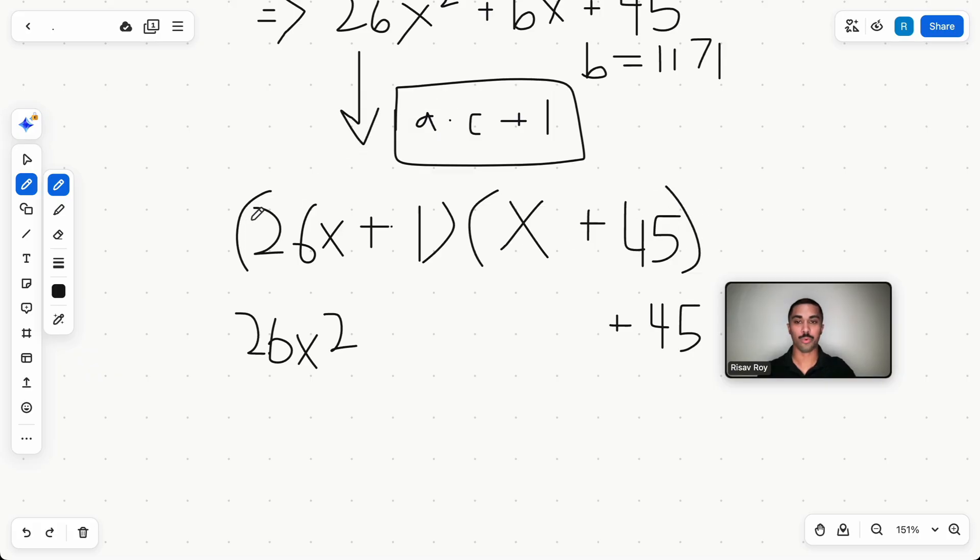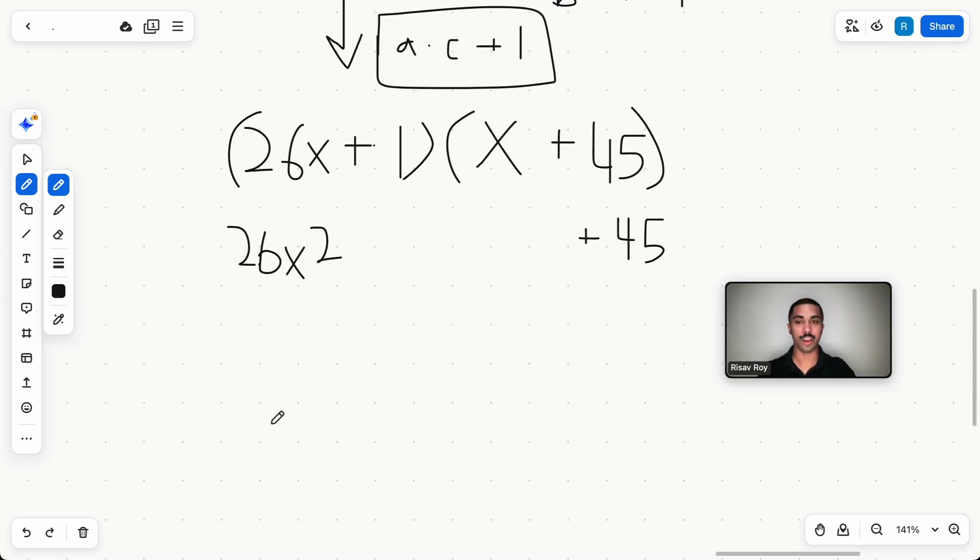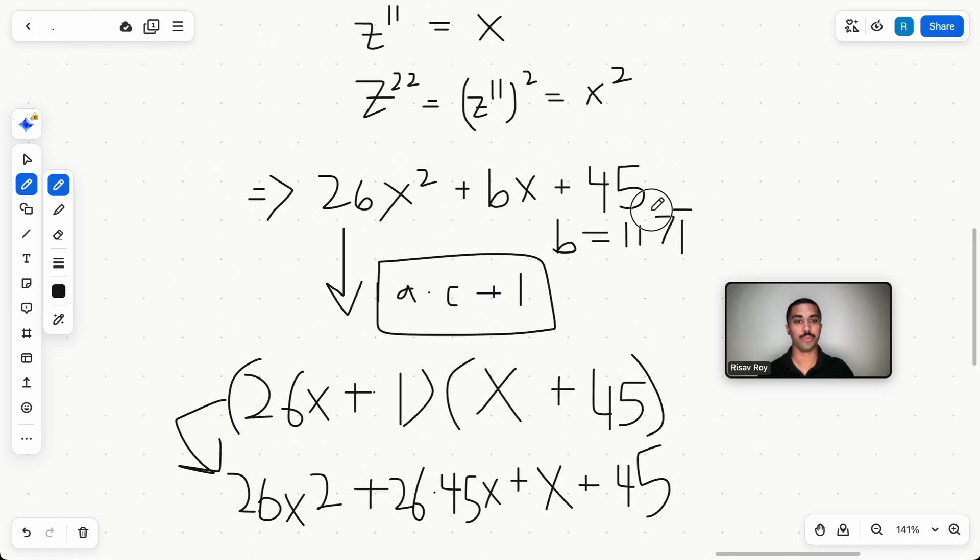And we're going to maximize the b value because all of the 26 is going to be multiplied by 45. Now, if for some reason you wanted to minimize the b value, what you would do is you would put the square root of 26 here, you'd put the square root of 26 here, you'd put the square root of 45 here, and the square root of 45 here. And that would minimize this b value. So this is simply going to give you whatever 26 times 45 is plus x, because this also gets distributed. That's what this would look like when it's all distributed out, 1171.